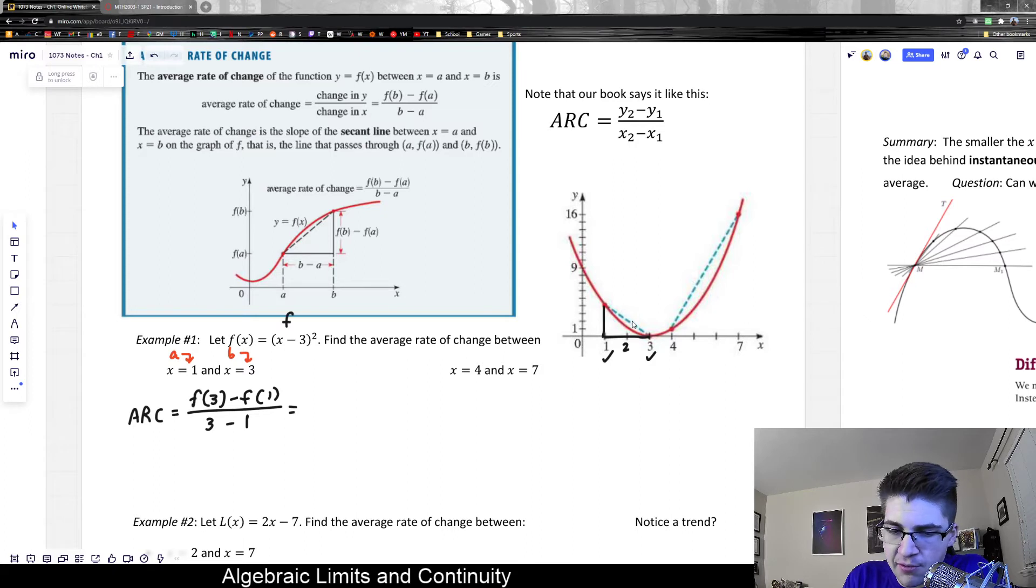So we could go ahead and do the math here. If I figure out what is f(3)? That just means plug 3 into the formula. So the formula says to take (x - 3)². So that would be (3 - 3)² or 0². 0² is of course 0.